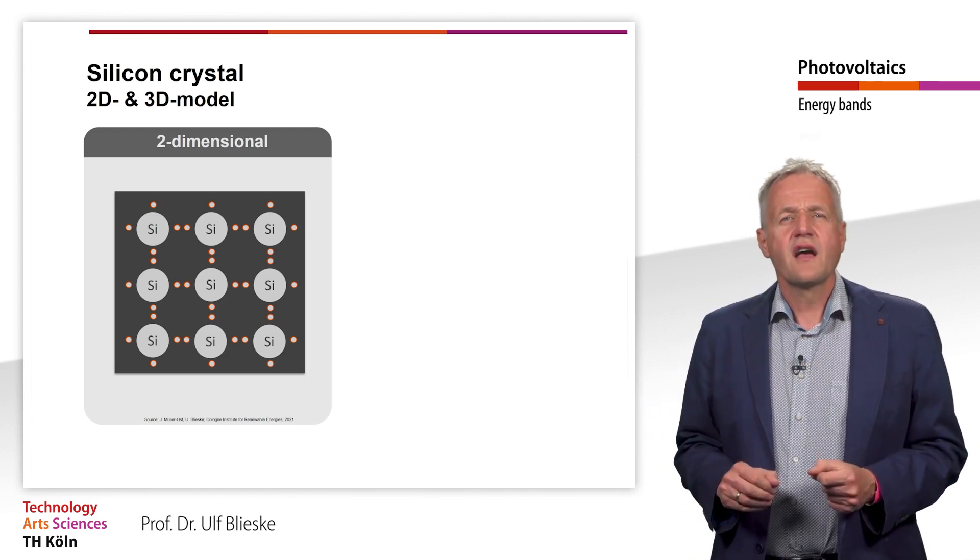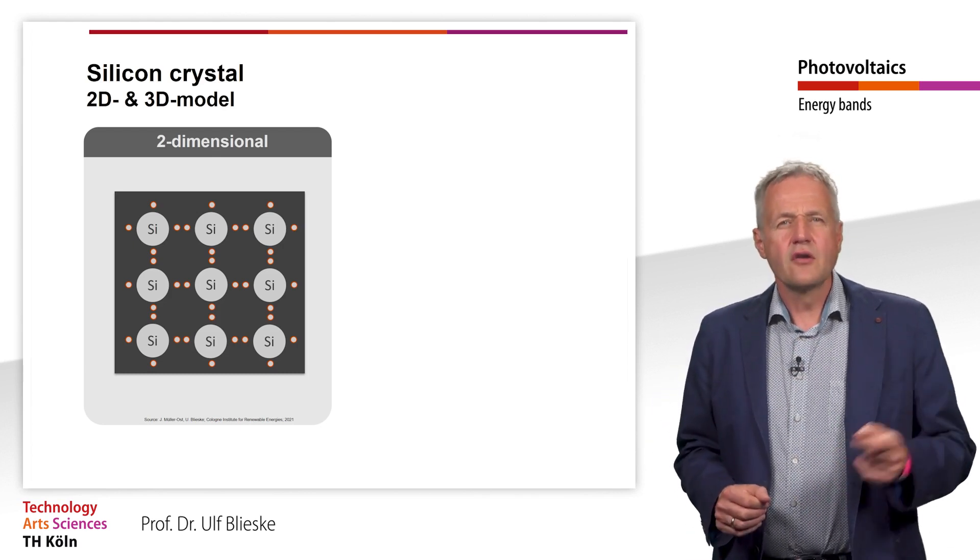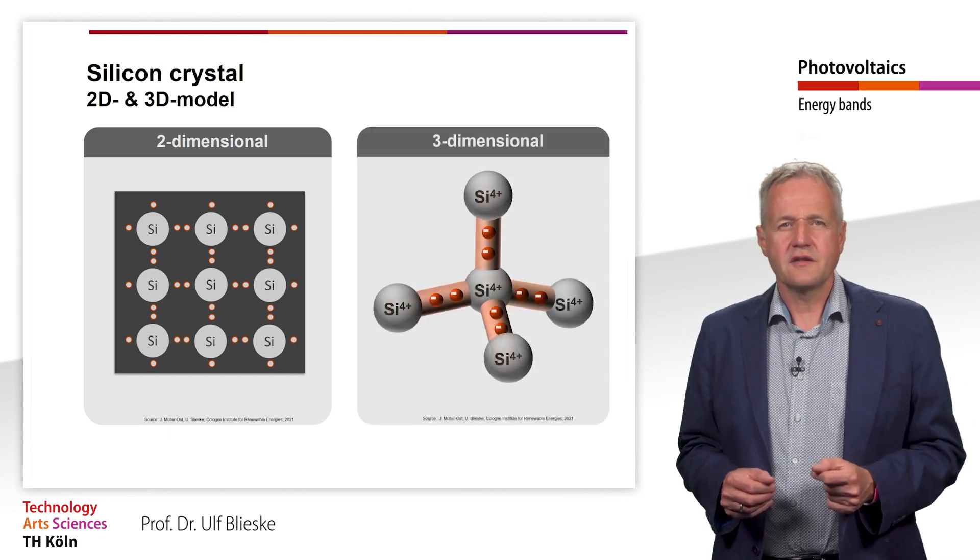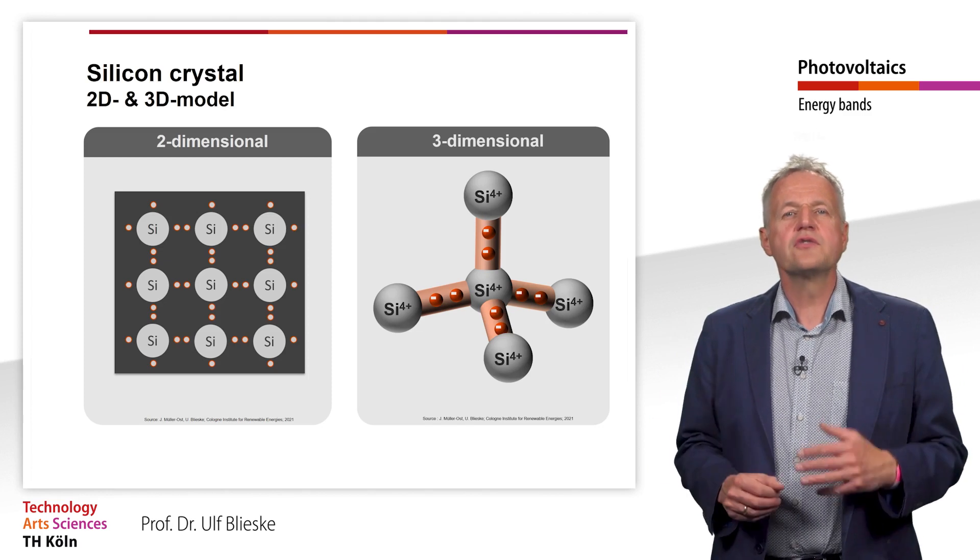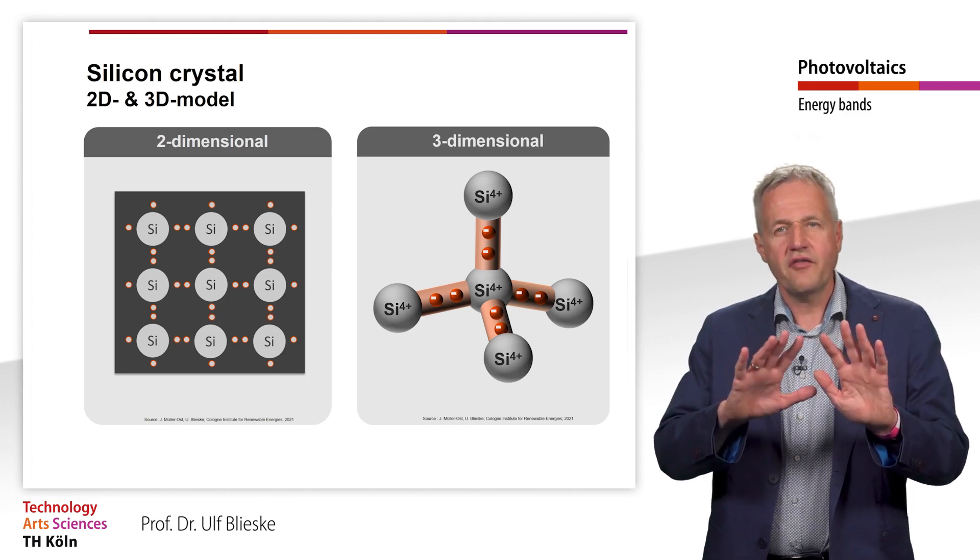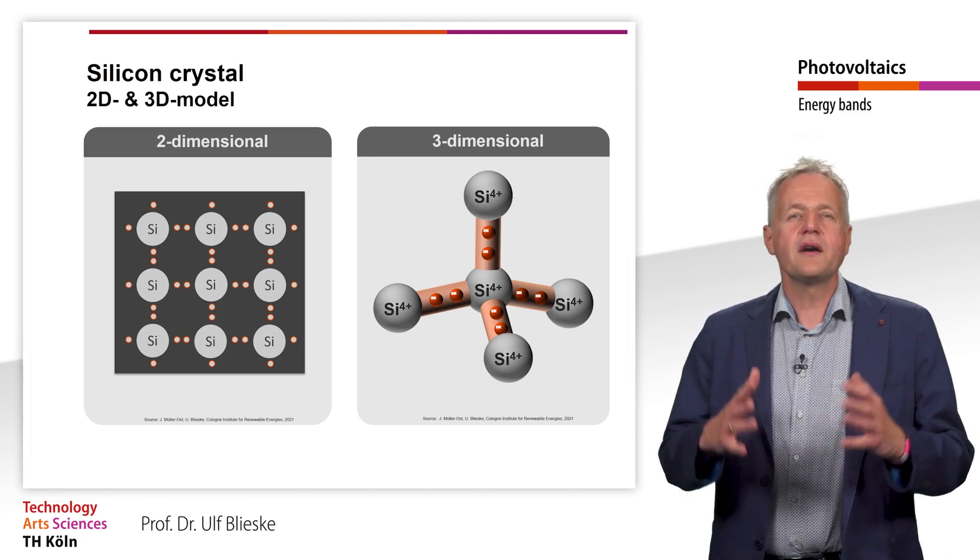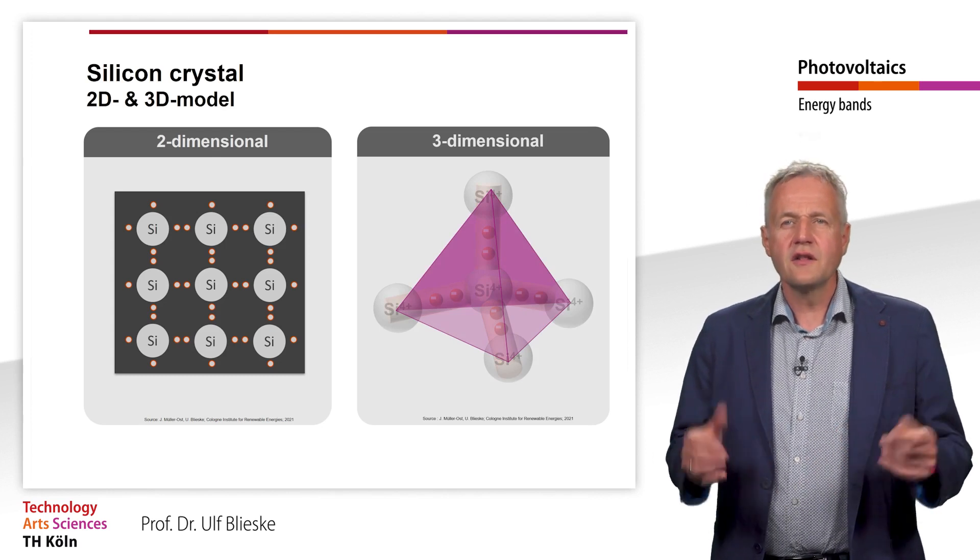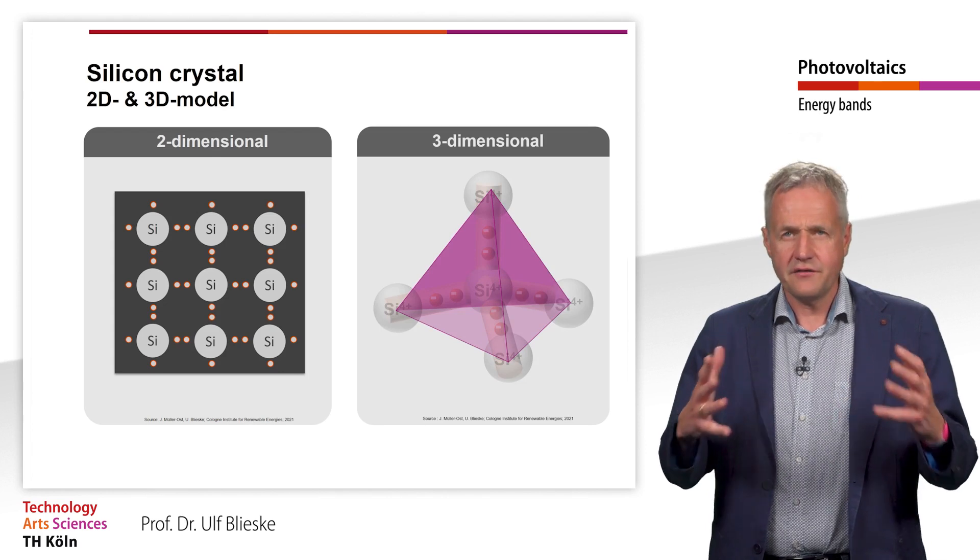Let us look at the three-dimensional representation of a silicon crystal. You can see that the neighboring atoms do not arrange themselves in a flat plane around the silicon atom. Instead, together they form a tetrahedron. A three-dimensional silicon crystal is composed of many of these tetrahedra.